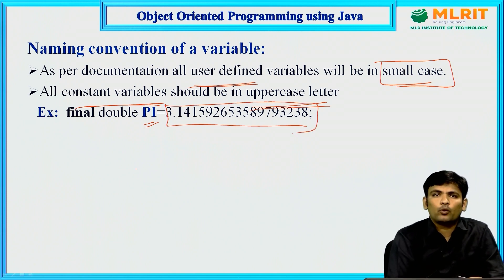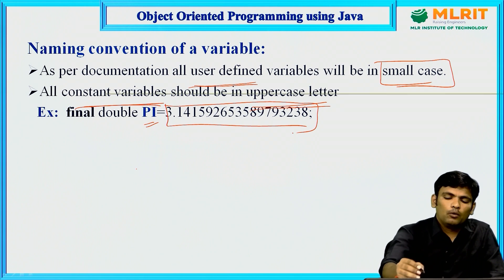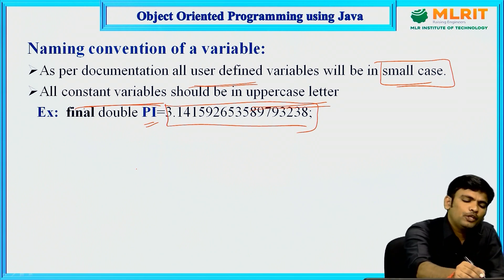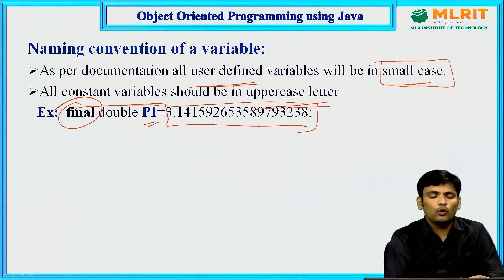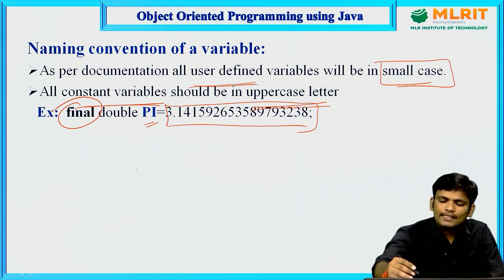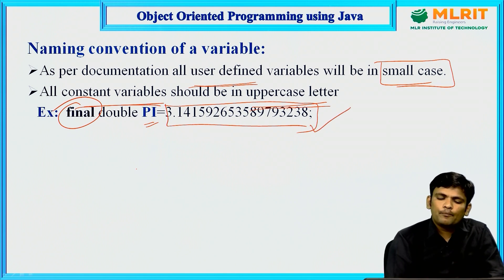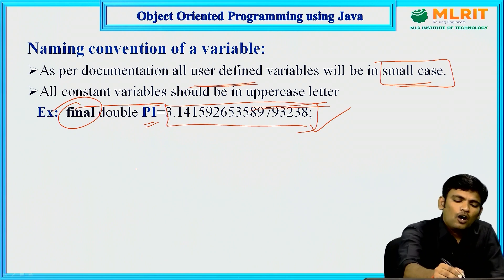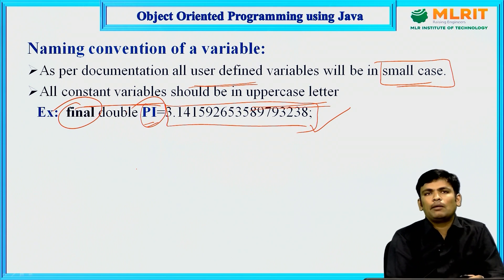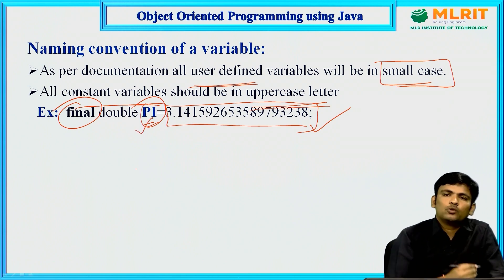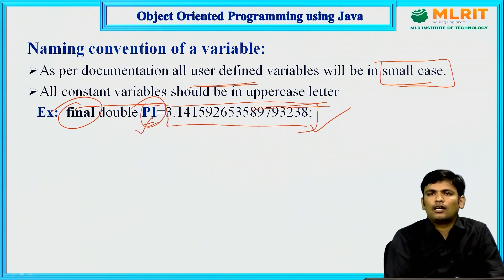If you do not want to change a value during execution of the program, you declare that variable with the final keyword. A variable declared with final cannot be modified — it becomes a constant variable. For constant variables, the naming convention requires all characters to be upper case, as per Java documentation.